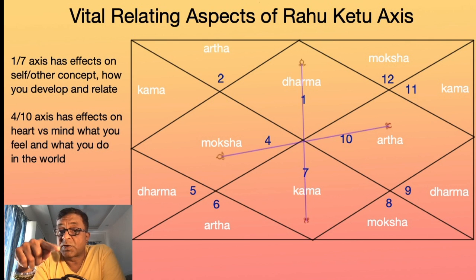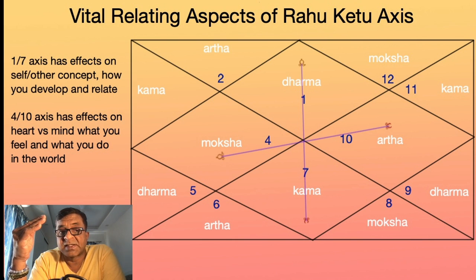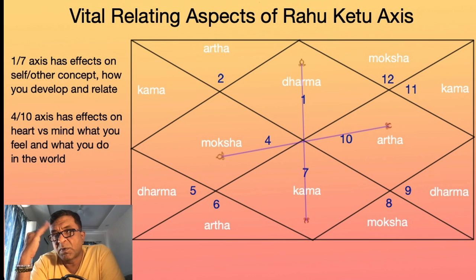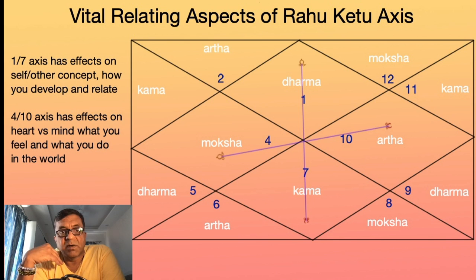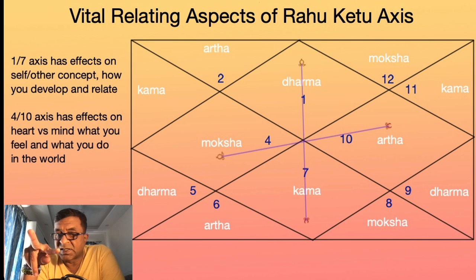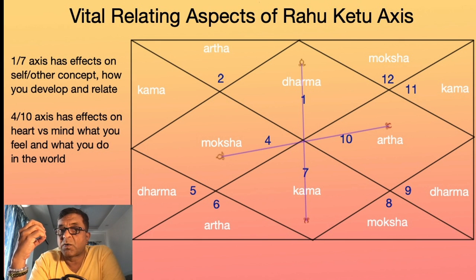The 4-10 axis, on the other hand — the 4th house being the house of the mother and home, the 10th being father and career — has effects on the heart versus mind. The mind goes out into the world and is used in career, dissipating energy externally. The heart is your home center where you feel comfortable — home is where the heart is. So heart and home are affected by this Rahu-Ketu axis. Rahu might be in the 4th and Ketu in the 10th, or vice versa.